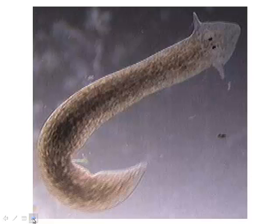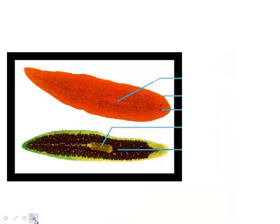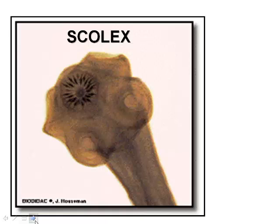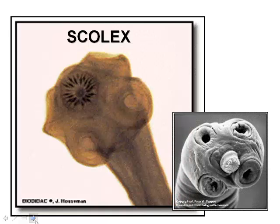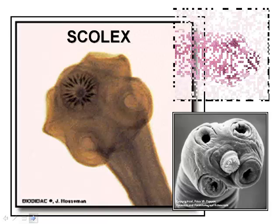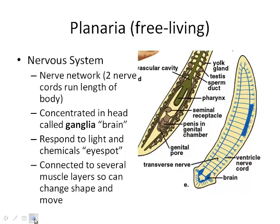Here's Phil the planarian — you can see what look like two big eyes, which we'll talk about in a second — plus a couple of other flatworms and the scolex, a weird-looking structure. Looking at free-living characteristics: the nervous system has two nerve cords that run down the length of the body, and a central ganglia which we can basically consider the brain of the organism.